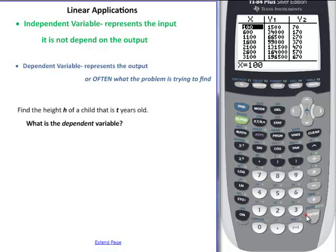Alright, so now we're going to take a look at linear applications. When we're talking about linear applications, we have independent variable and dependent variable. Honestly, I don't use those terms very often, but I do talk about the input and the output. The independent variable usually represents the input. It's not dependent on anything.